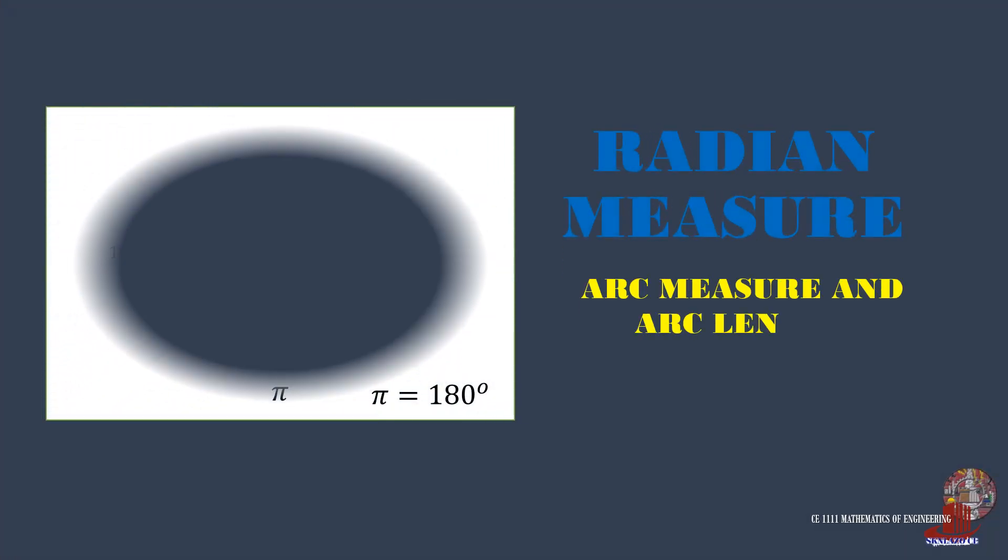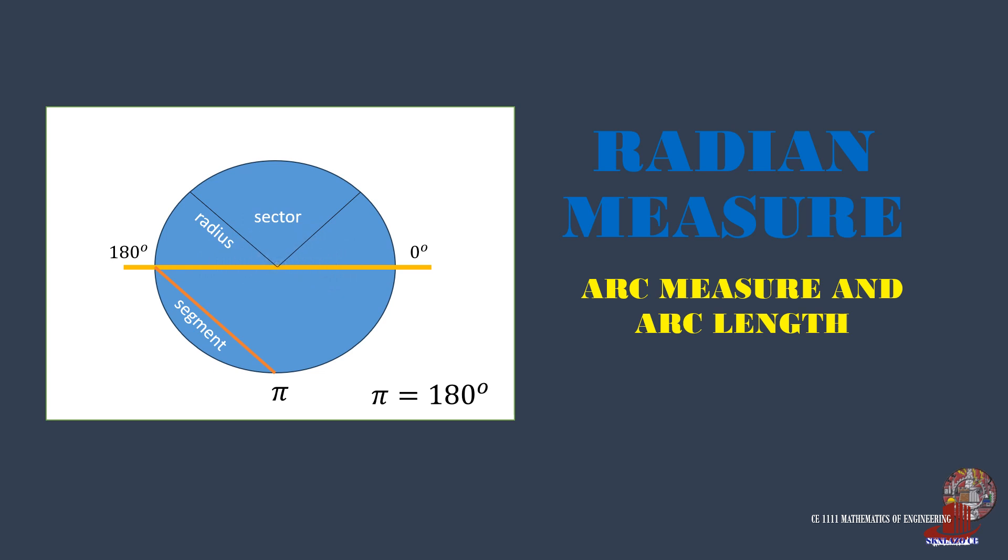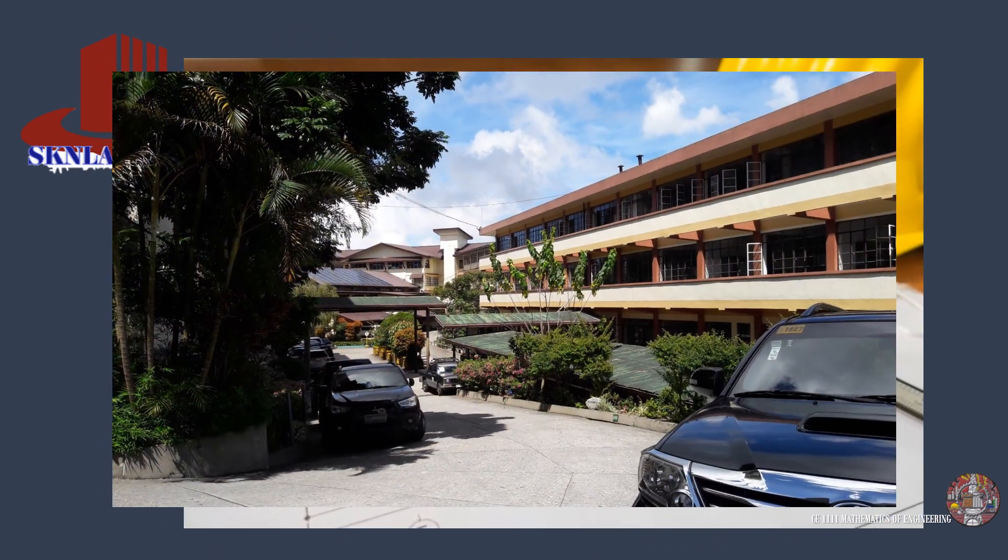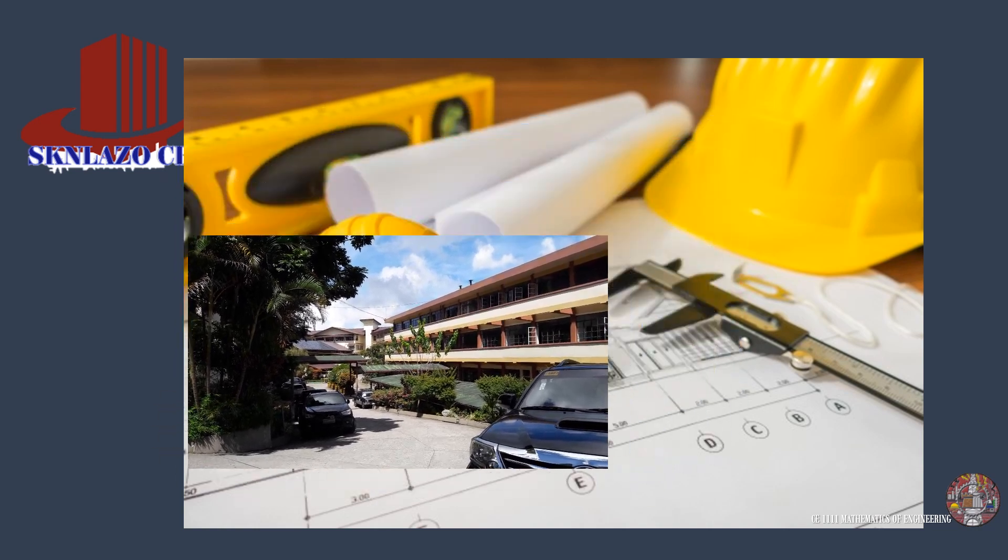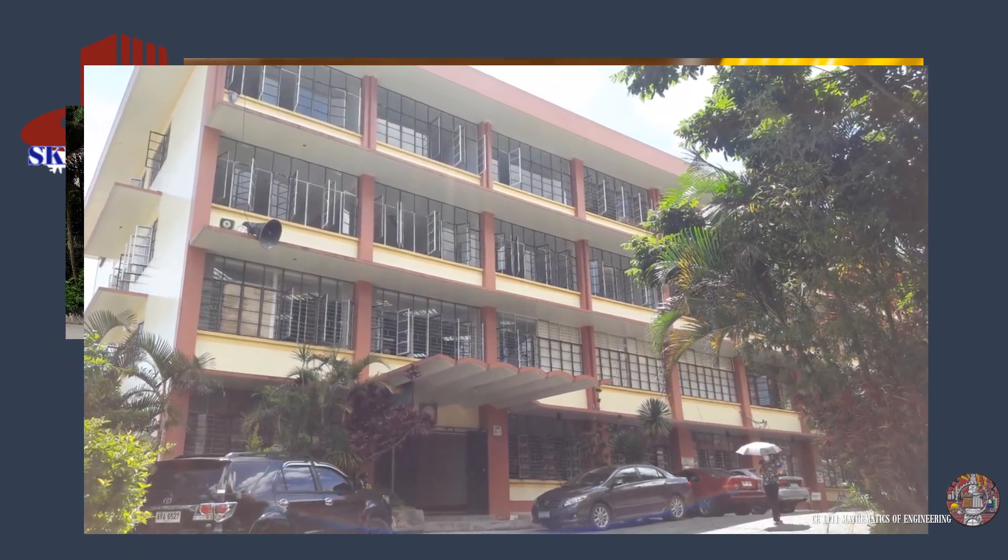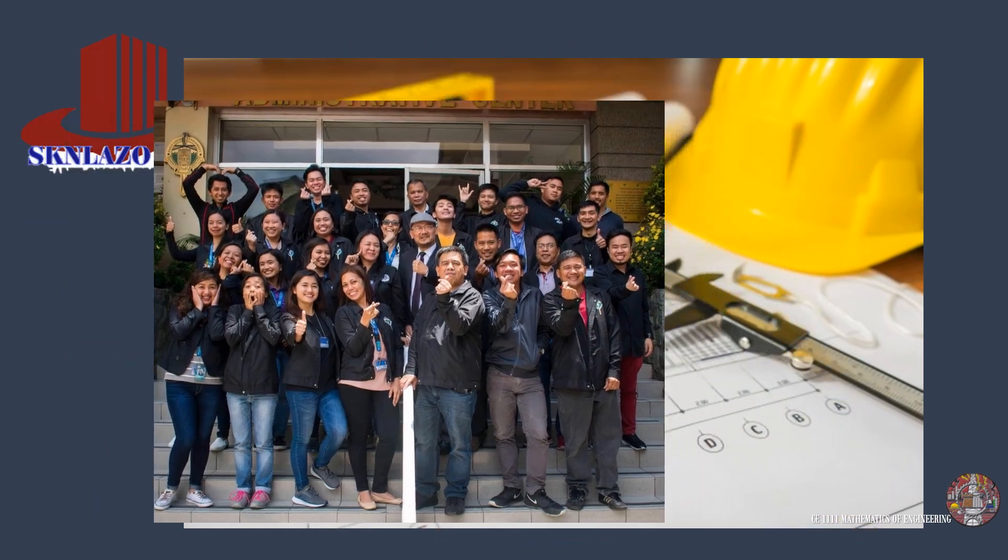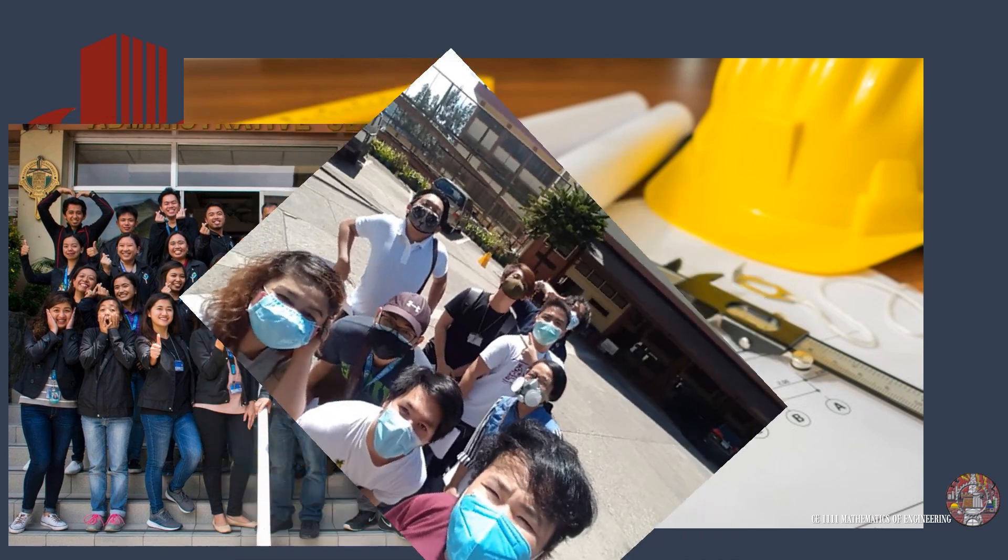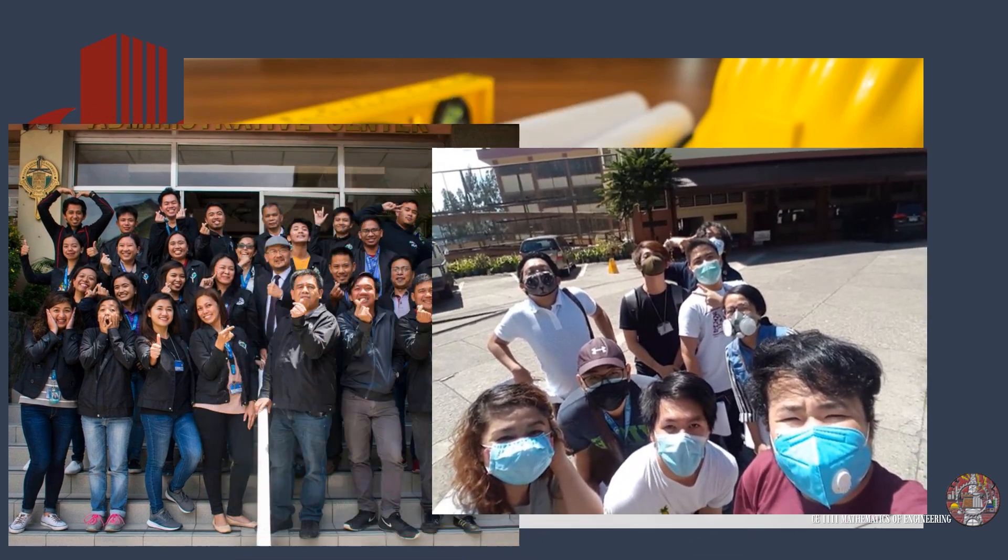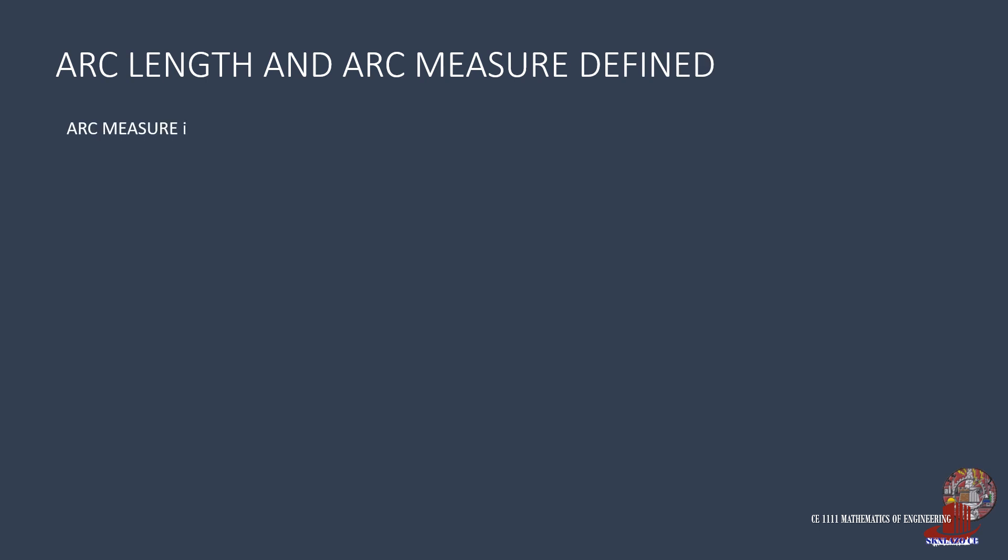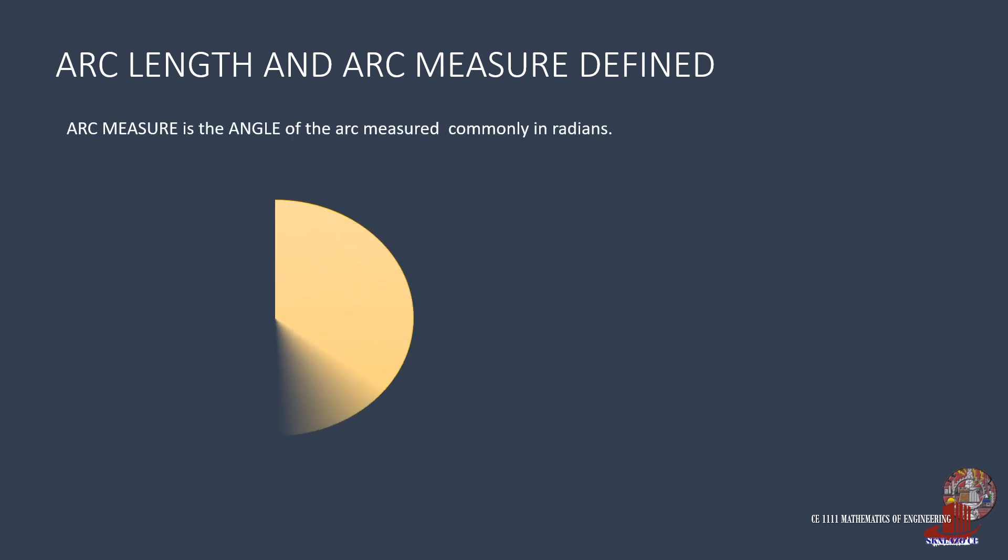There are two components of circular arcs. Learn about them here in Mathematics of Engineering. The two components of arcs are the length and the angle. But what are they?